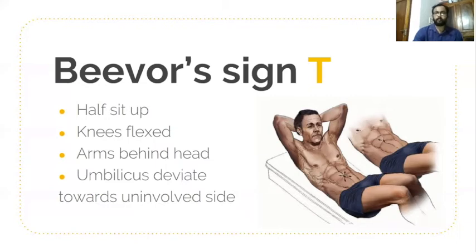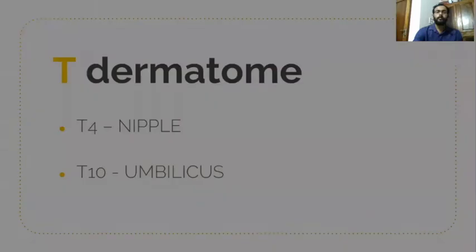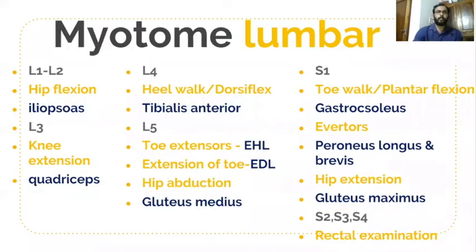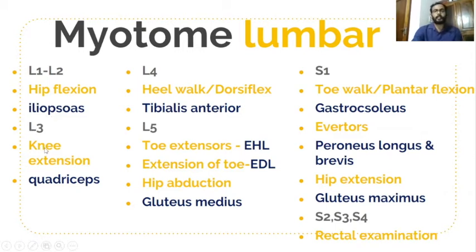For the lumbar myotomes: L1 and L2 — hip flexion is performed against resistance in the seated position. For L3 — knee extension against resistance to test the quadriceps muscle.